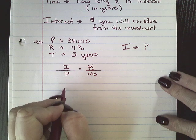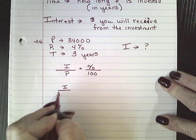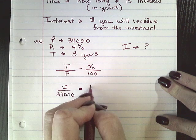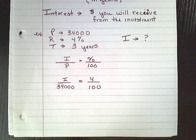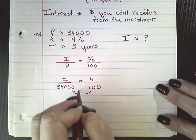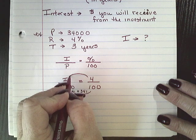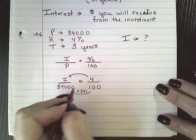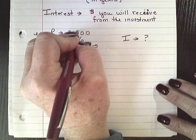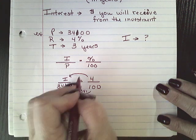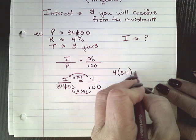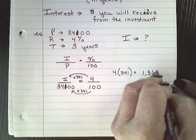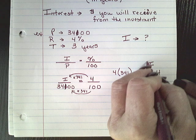So we're looking for the interest. We know that our principal is $34,100 and our rate is 4%. Right now, all you use is the interest, the principal, and the rate. I can multiply going in this direction by 341, and I can do the same in this direction — also multiply. So 4 times 341 is equal to $1,364. That is going to be the interest for one year.